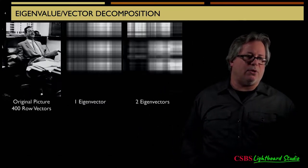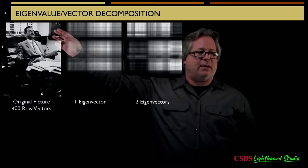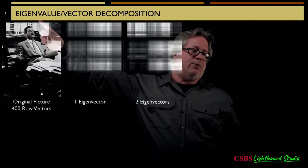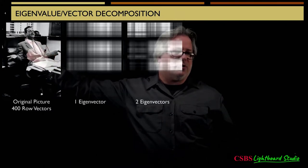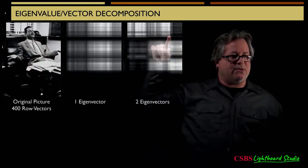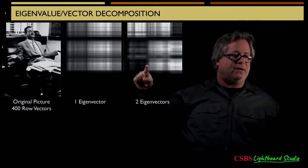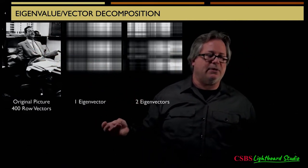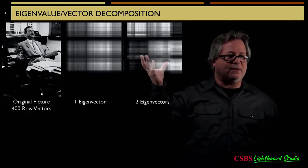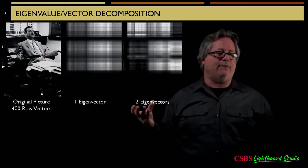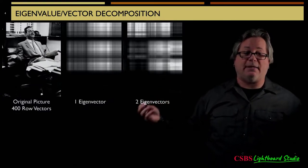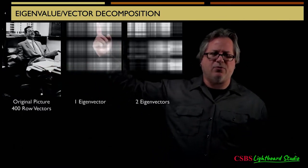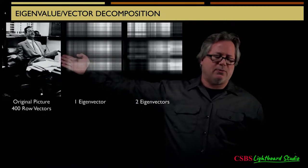If I retain two eigenvectors, it's starting to capture some of the patterns. It's got the lighter shade at the top from the sunlight coming in and darker down here. It's two eigenvectors starting to capture some of the patterns, but they aren't quite clear enough to make this photo look like the original. I've dramatically reduced the amount of information, but it doesn't quite capture the patterns I'm looking for.